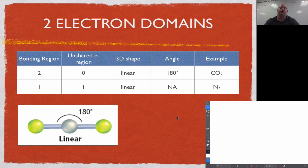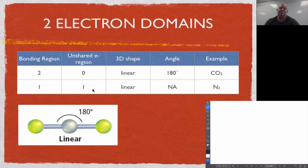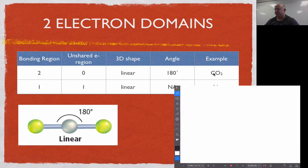When we go on to two electron domains, we have two options: either two electron regions with nothing unshared, or one region that's bonding and one that's unshared. We'll cover both of those. So for two bonding regions with nothing unshared, we get a linear shape with a 180-degree angle, and we'll use carbon dioxide as our example.